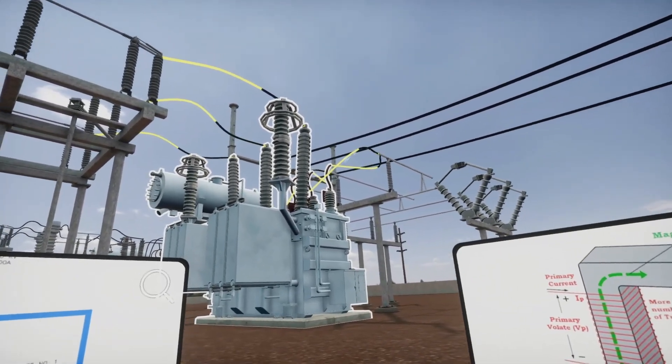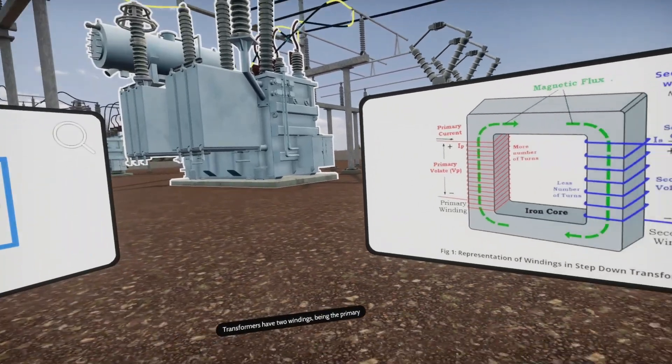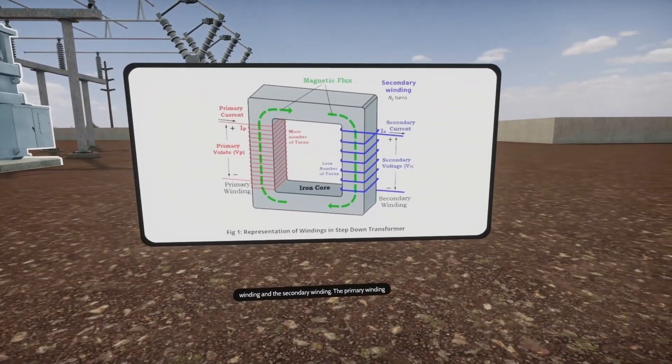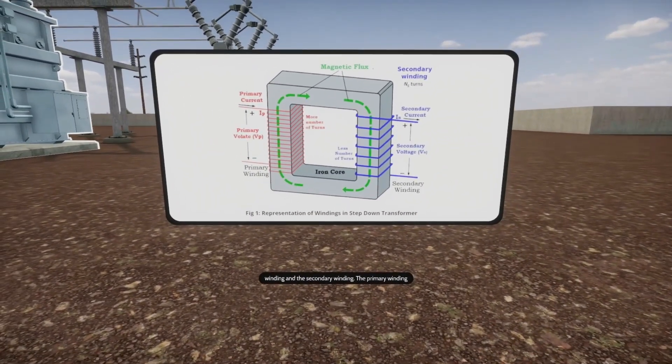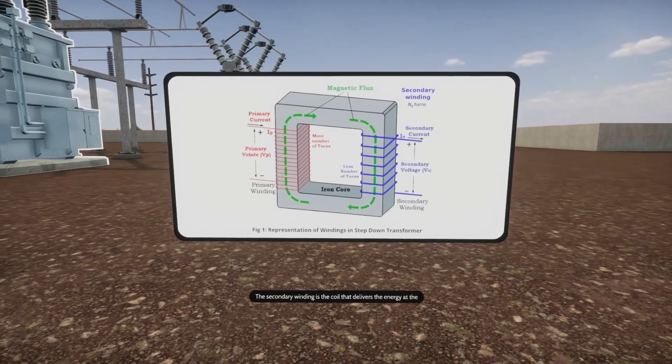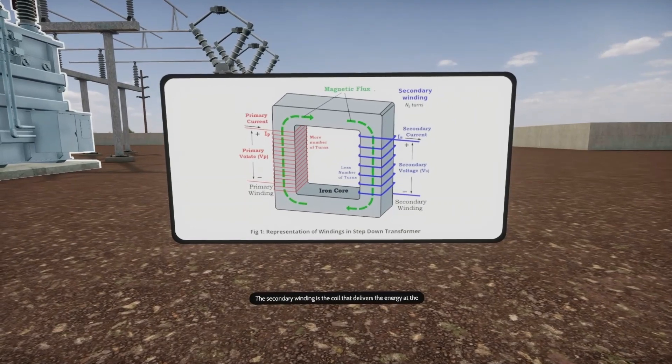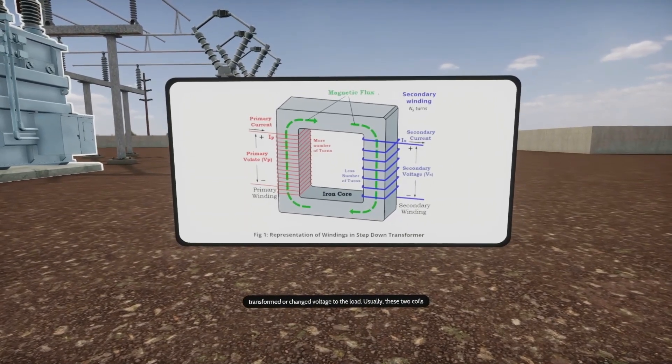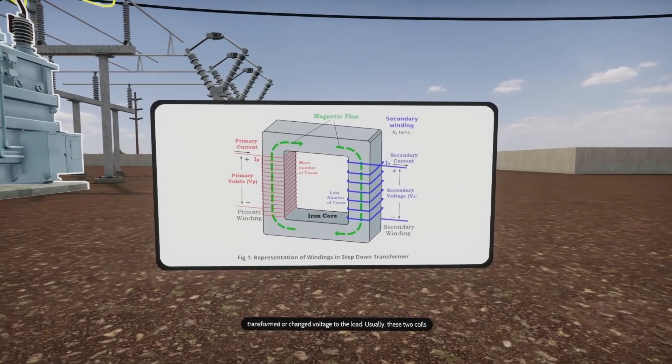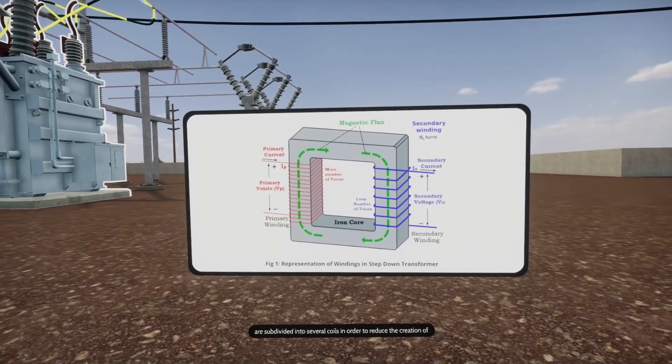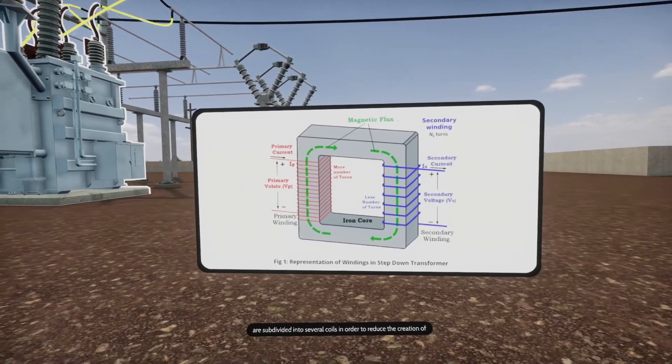Transformers have two windings, being the primary winding and the secondary winding. The primary winding is the coil that draws power from the source. The secondary winding is the coil that delivers the energy at the transformed or changed voltage to the load. Usually, these two coils are subdivided into several coils in order to reduce the creation of flux.